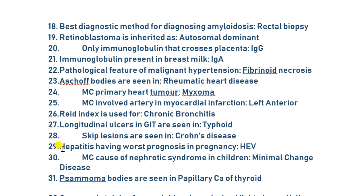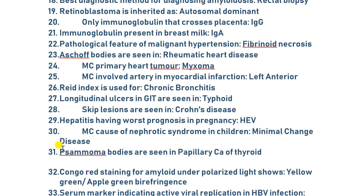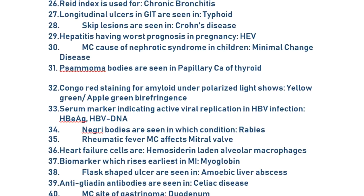Pathological feature of malignant hypertension is fibrinoid necrosis. Aschoff bodies are seen in rheumatic heart disease. Most common primary cardiac tumor is myxoma. Most commonly involved artery in myocardial infarction is the left anterior descending artery. Reid index is used for chronic bronchitis. Longitudinal ulcers in the GIT are seen in typhoid. Skip lesions are seen in Crohn's disease. Hepatitis with worst prognosis in pregnancy is HEV — type E.